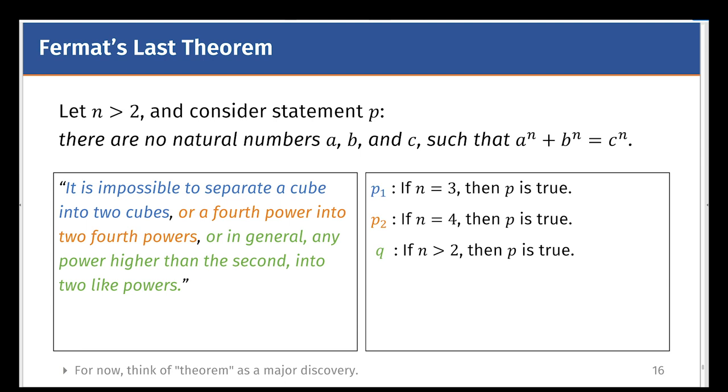Consider the statement that there are no natural numbers a, b, and c such that a^n + b^n = c^n. Now this is true when n equals 3, also true when n equals 4.